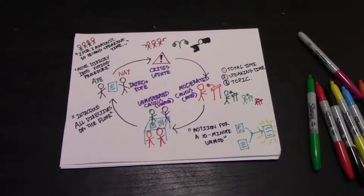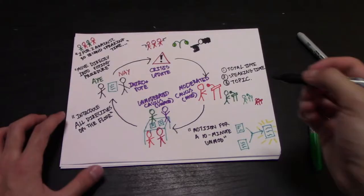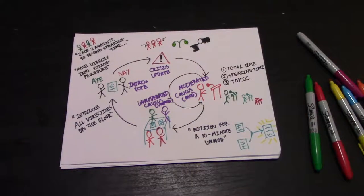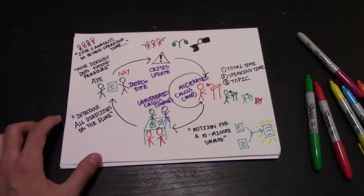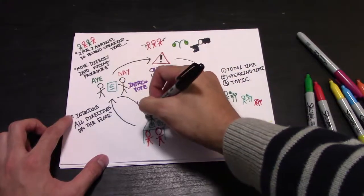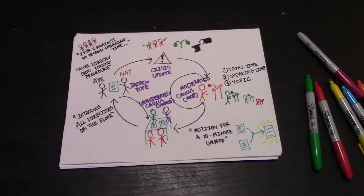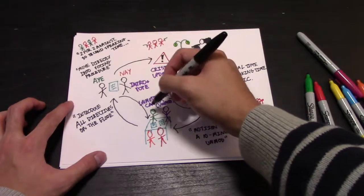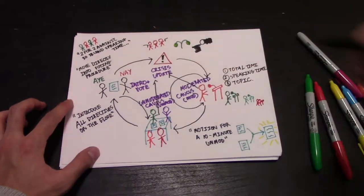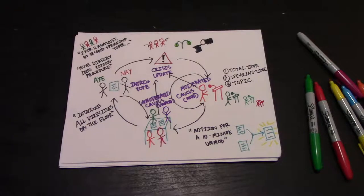But note that the circle is not completely rigid. After a moderated caucus, you could do another one, or you could go from introducing the directives back into an unmoderated caucus to merge once more. Or at any time, another crisis break could happen, so stay on your toes. This is the general structure, but it's not the absolute one.